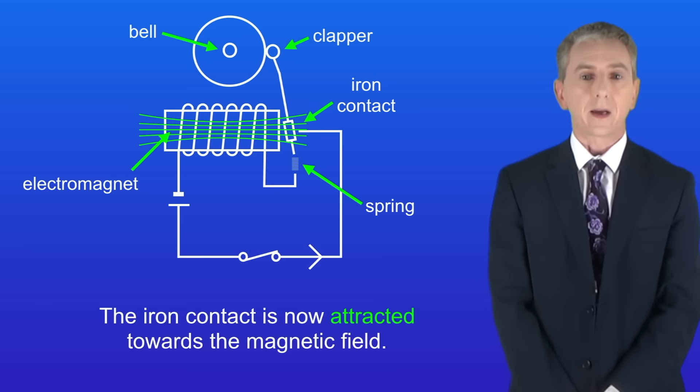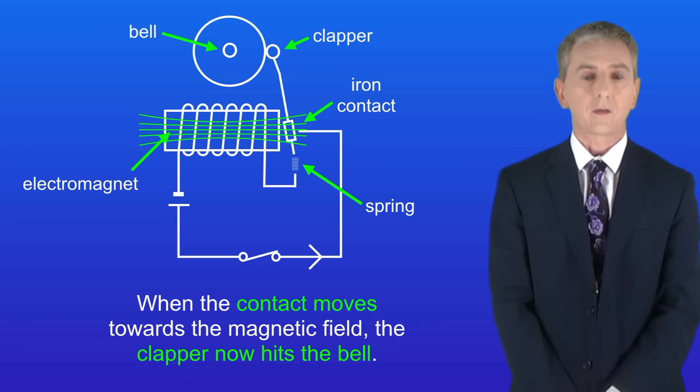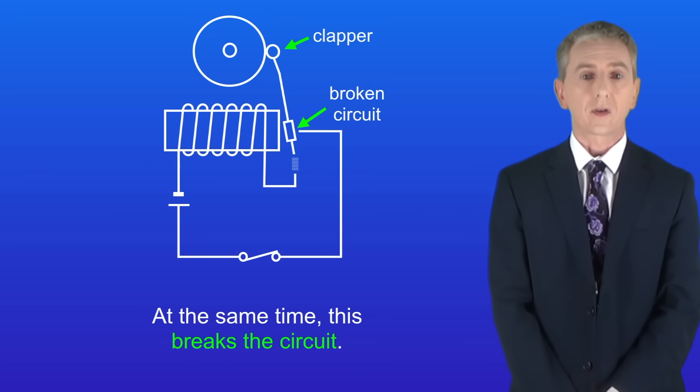The iron contact is now attracted towards the magnetic field. When the contact moves towards the magnetic field, the clapper now hits the bell. At the same time, this breaks the circuit.